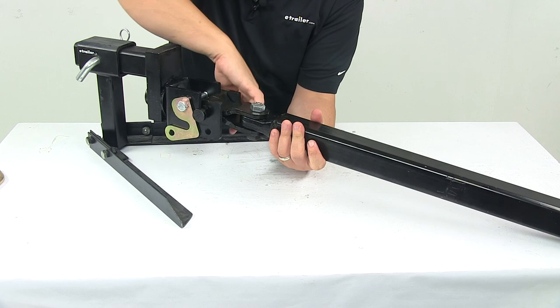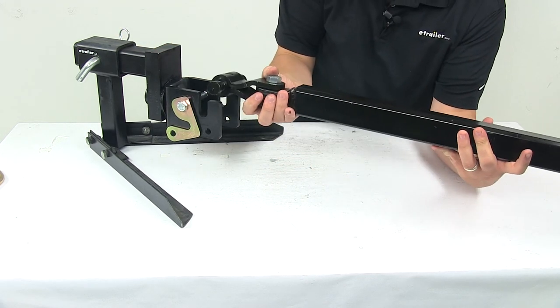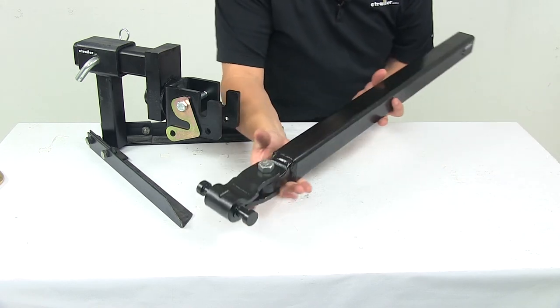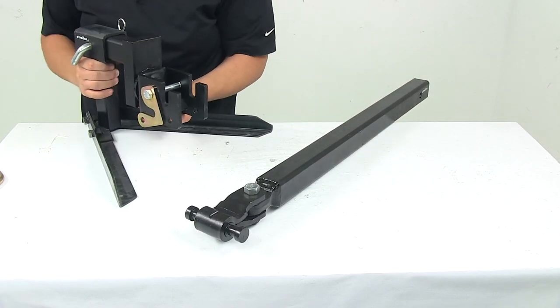When you're ready to uncouple, remove the pin and clip, flip back the latch plates and then you can remove the trailer side coupler from the vehicle hitch.